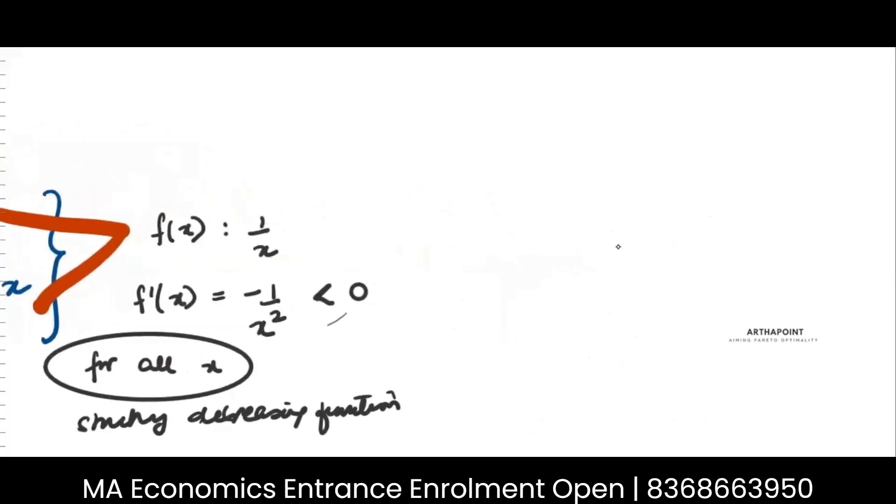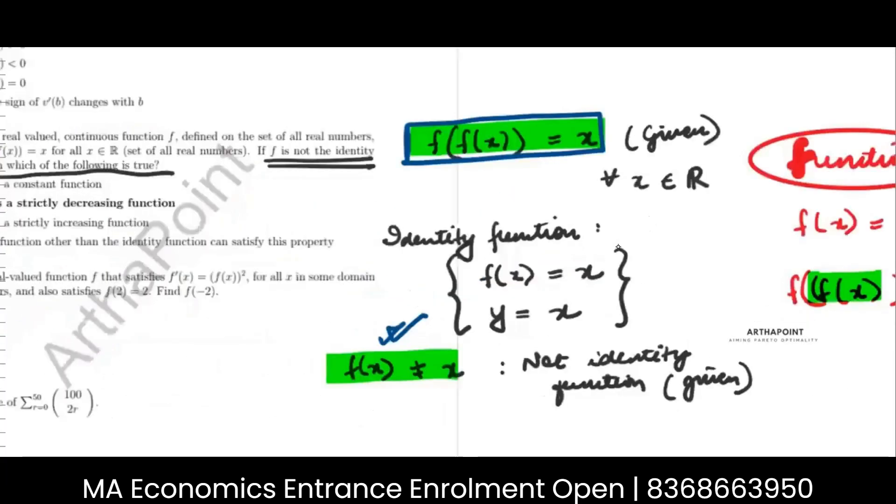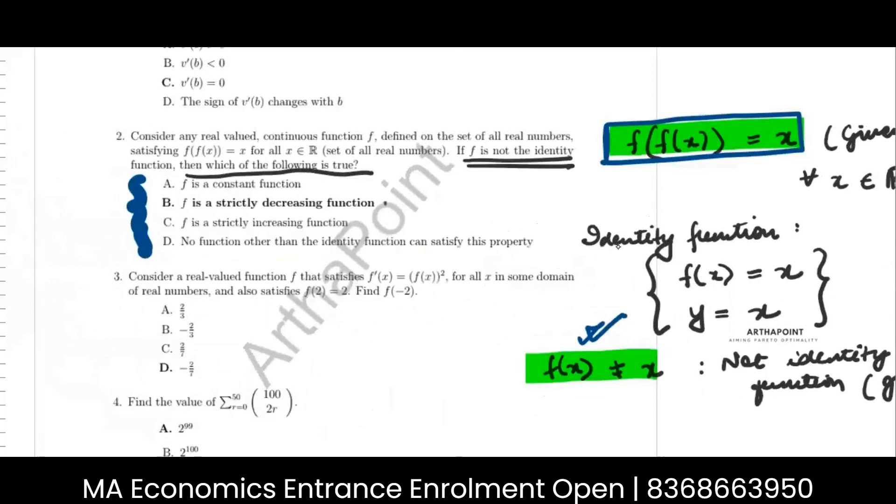And if you notice, you will see that 1 by x is actually a rectangular hyperbola. f of x is equal to 1 by x. So it is a strictly decreasing function for all values of x. Therefore, I can say that the answer is b.